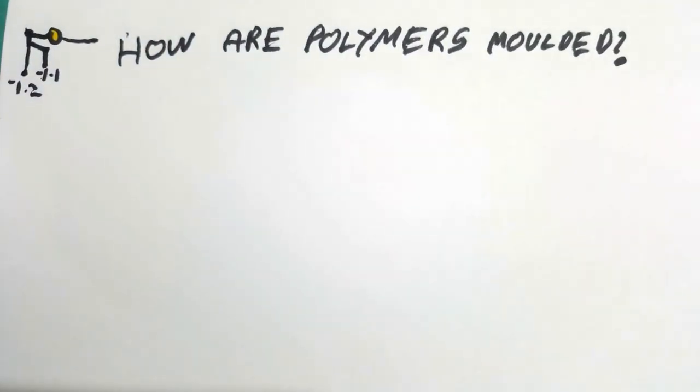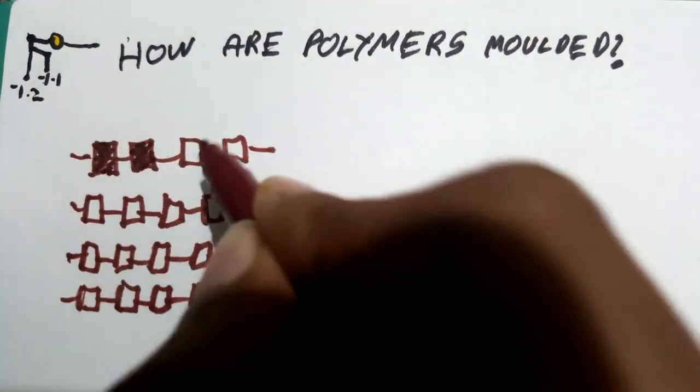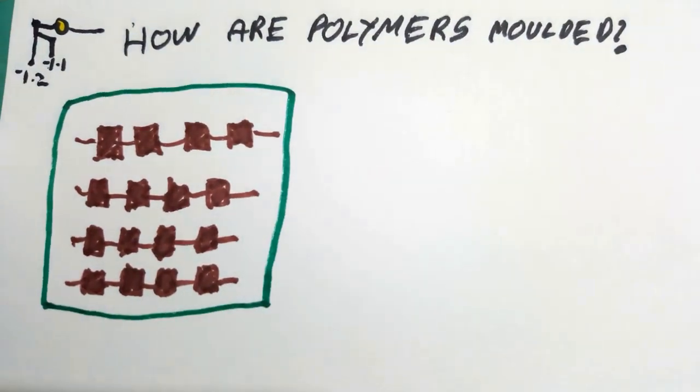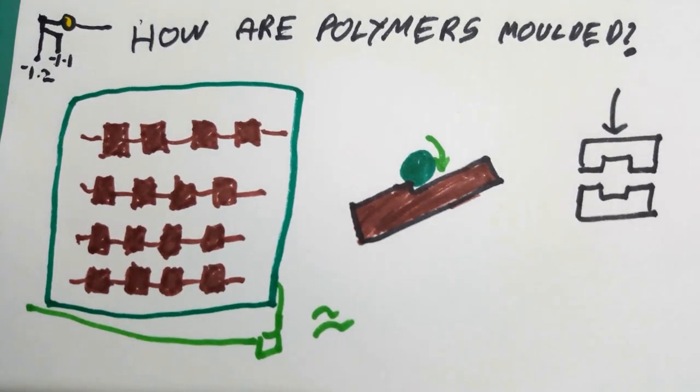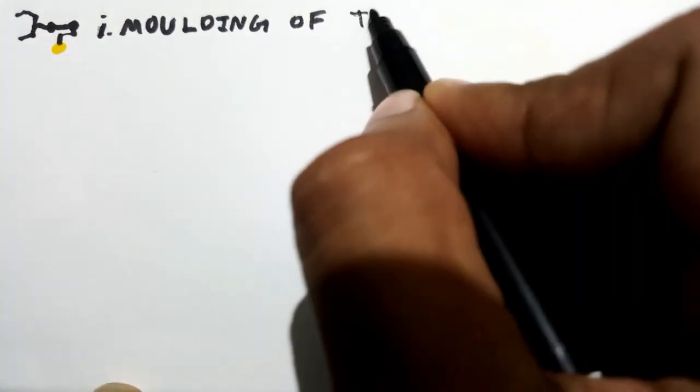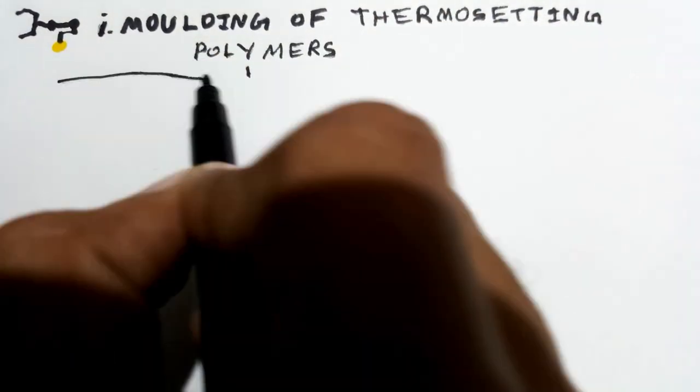Coming back to moulding, the first step in moulding of polymers is processing of polymers, which due to the very nature of polymers is similar to those used to form and shape metals. Hence, we will look at it under two main subheadings. First, moulding of thermosetting polymers which is done by using two main methods.